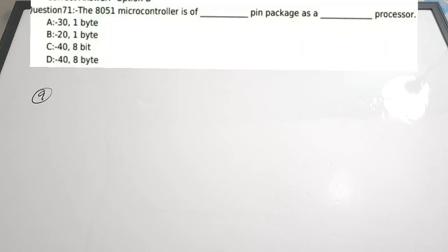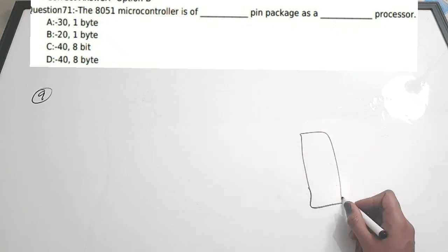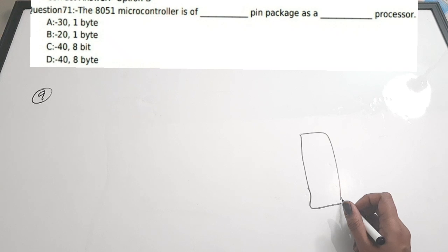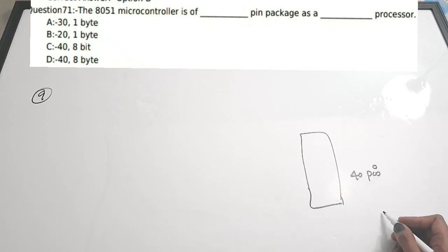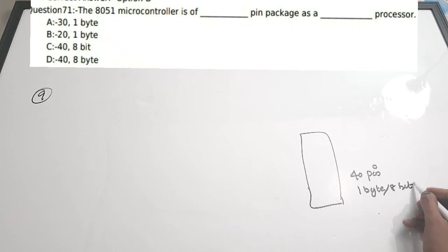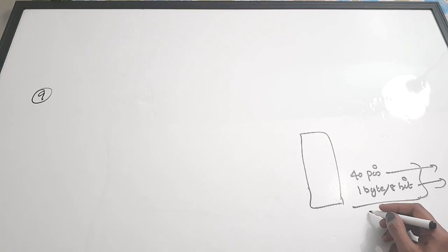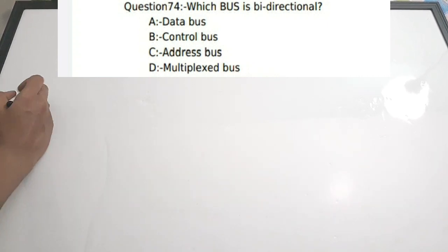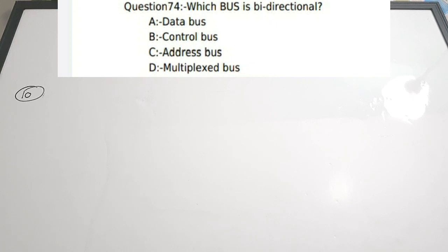Ninth question: The 8051 microcontroller is of dash pin package and a dash bit processor. The 8051 is a 40-pin IC and it is an 8-bit (1 byte) processor. Correct answer is option C.